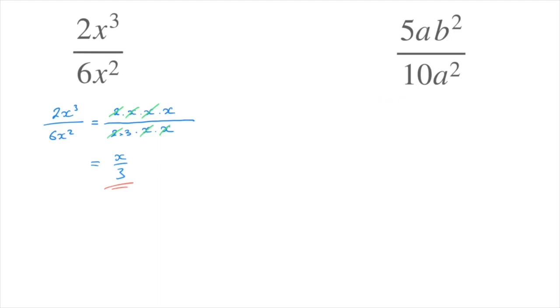We now look at the second fraction. We have 5ab squared over 10a squared. The method is the same, so I start by writing the numerator as a product of its factors. So 5ab squared means 5 times a times b times b.